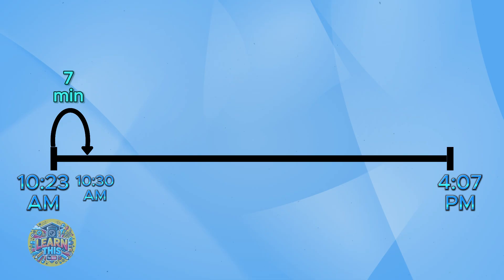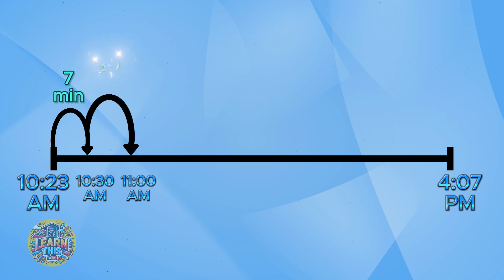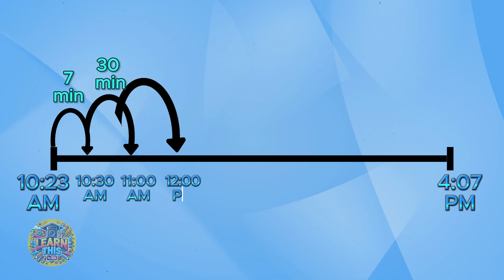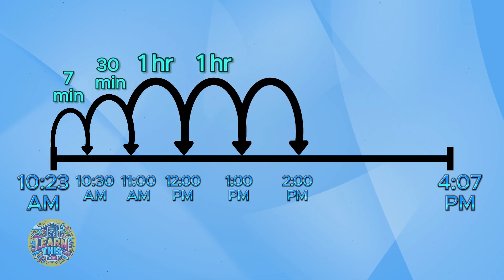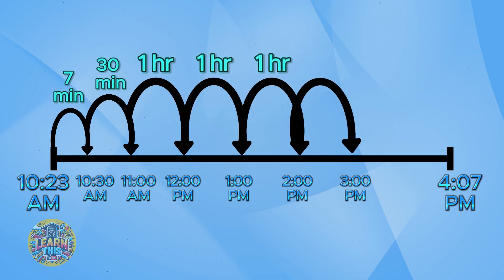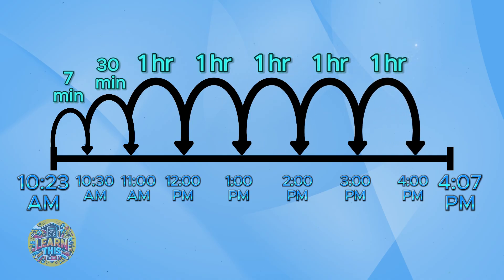Now I want to get to the next closest whole hour. You can count by tens if that's easier. Because our time is 10:30, in 30 minutes it will be the next closest hour, which is 11 o'clock. So I'll write 30 minutes up top. Now we can just count by whole hours until we get to the hour where our plane arrives, which is 4 o'clock: 11 AM to 12 PM, 12 PM to 1 PM, 1 PM to 2 PM, 2 PM to 3 PM, 3 PM to 4 PM. Our plane arrives in the 4 o'clock hour, so we stop there and go back to adding minutes.